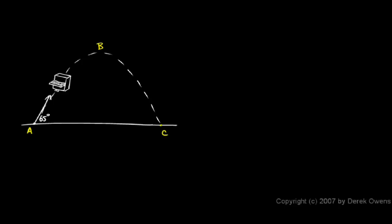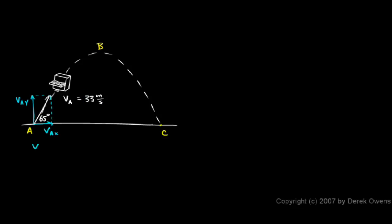The initial velocity, instead of calling it V₀, I'll call that VA. VA is 33 meters per second. Now this number, 33 meters per second, won't actually show up in our solution, because that initial velocity is at a 65 degree angle. It consists of two parts: VAx and VAy — the horizontal and vertical components. The key to solving this problem is to consider horizontal and vertical motion separately. We'll use the 65 degree angle and 33 meters per second to find VAx and VAy.